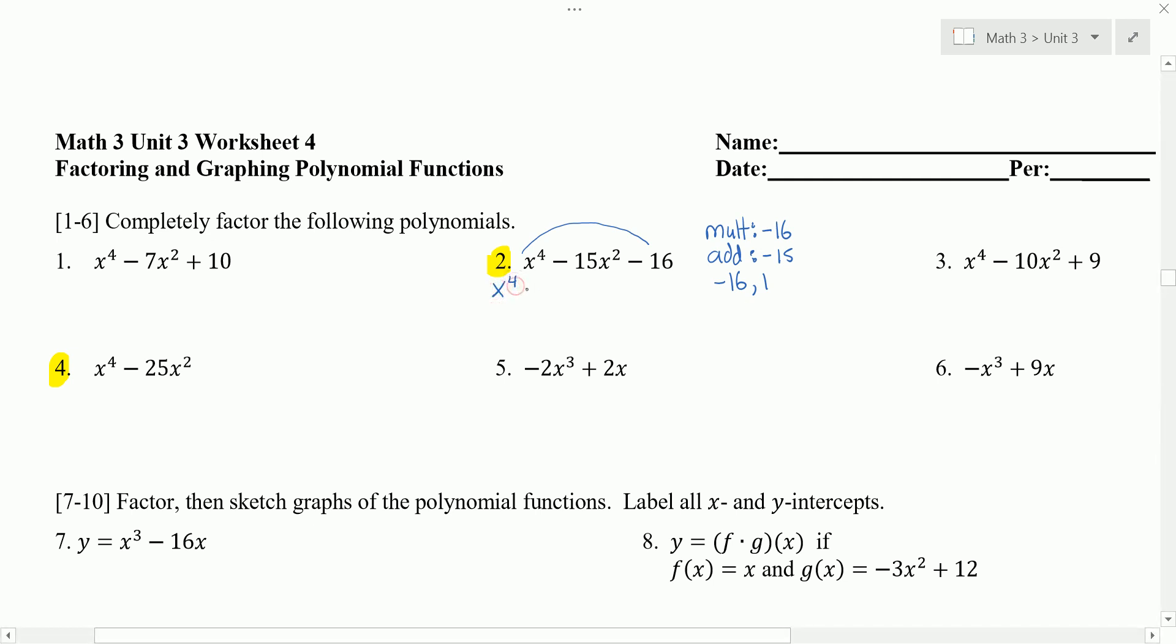x to the 4th minus 16x squared plus 1x squared minus 16. So we're splitting up the middle term, the negative 15x squared to the negative 16x squared plus, and if I want, I could write the 1x squared. I'm using the negative 16 and the 1 that we came up with.